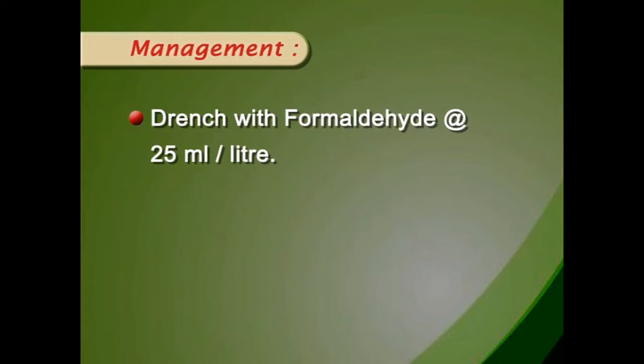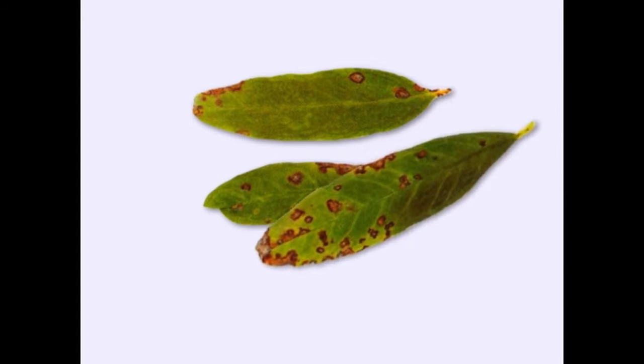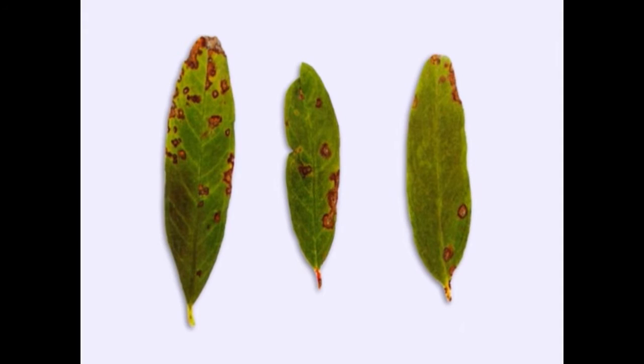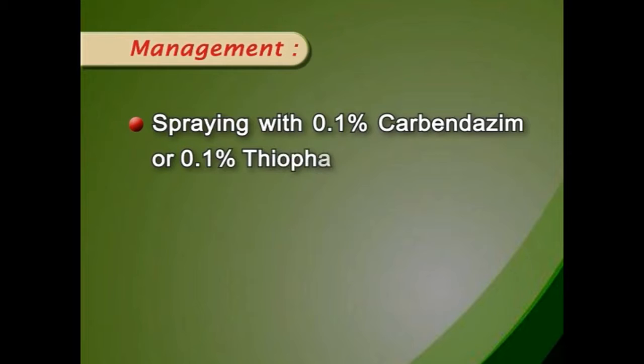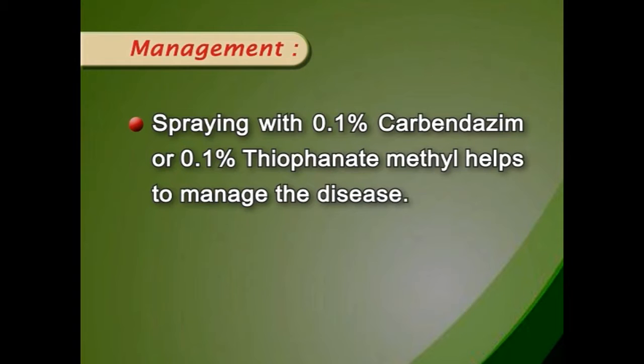Next disease is Sphaceloma leaf spot, caused by Sphaceloma punicae. The disease attacks leaves, shoots, calyx and fruits. Rusty spots appear on leaves; infected leaves turn yellow and die. Rust-colored pustules appear on the fruits. Drizzling rains and abundant dew favor disease development. Spraying with 0.1% carbendazim or 0.1% thiophanate methyl helps to manage the disease.